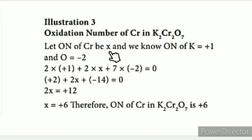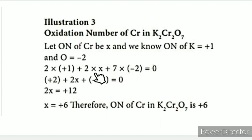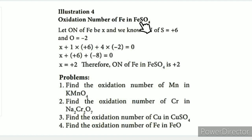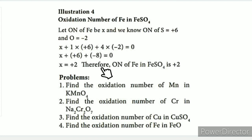The third example is K2Cr2O7, potassium dichromate. We find the chromium oxidation number. Potassium is +1, so 2 × (+1) = +2. Chromium is unknown x, so 2x. Oxygen is -2, so 7 × (-2) = -14. Setting up: +2 + 2x + (-14) = 0, so 2x = +12, therefore x = +6. Chromium oxidation number is +6.